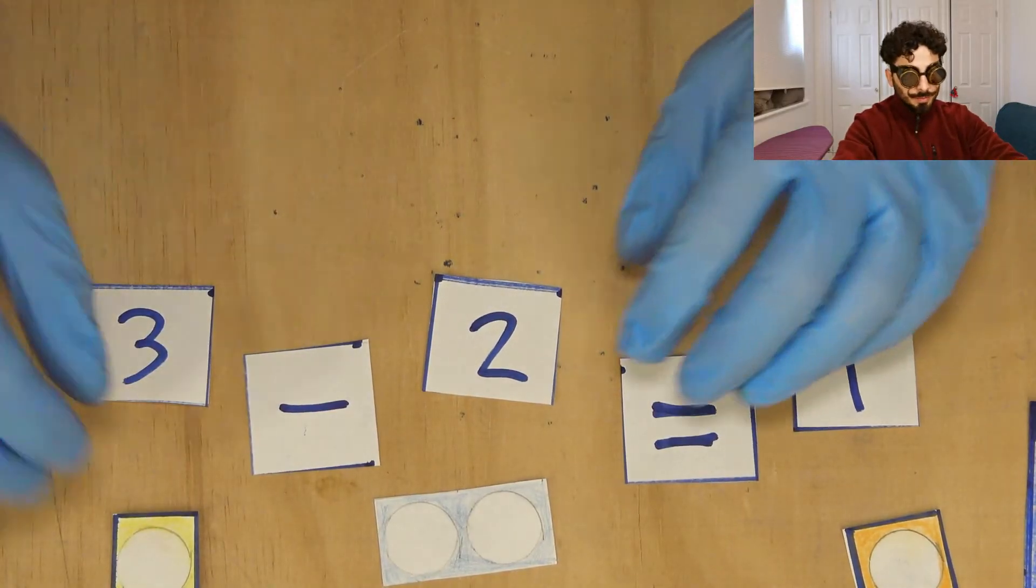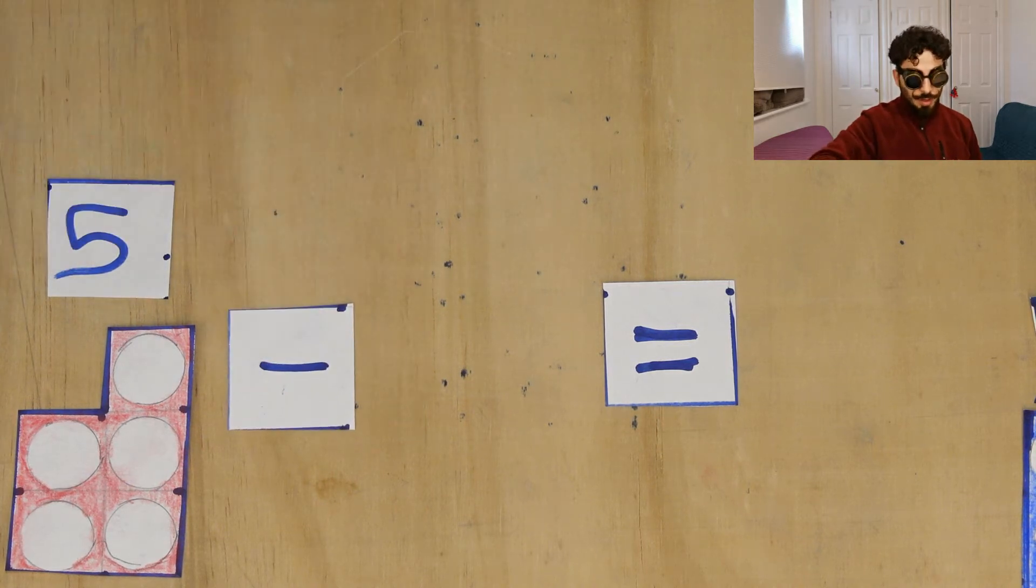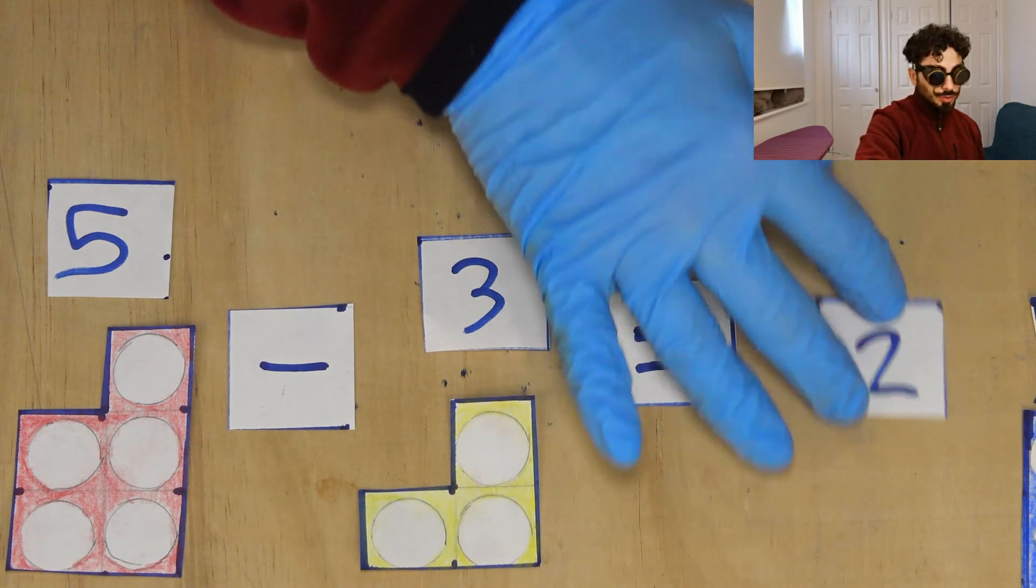So let's try another one. Five, add our number, take away three, add our number, equals two.